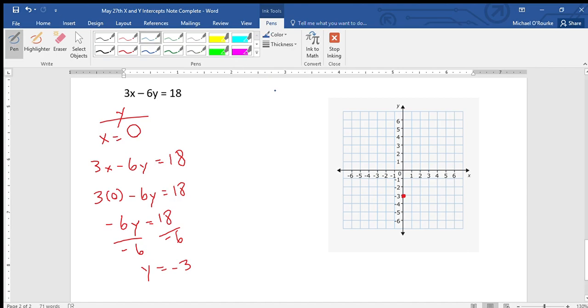Then my x-intercept: y is going to equal zero. So 3x minus 6y equals 18. 3x minus 6 times 0 equals 18. I get 3x equals 18 because that's going to equal zero, so it just disappears. Divide by my coefficient: x equals 6.